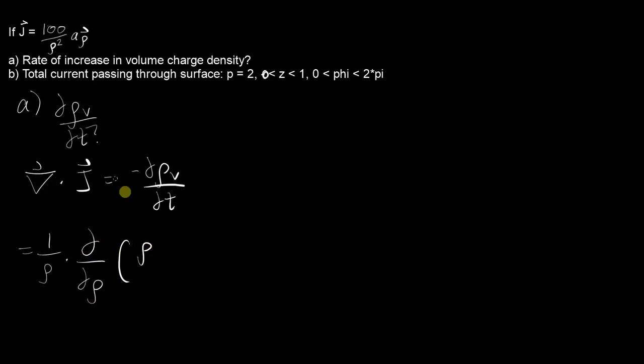So once you cancel out one of these rhos you'll be left with the derivative of 100 over rho times 1 over rho, which works out to be negative 100 over rho cubed.